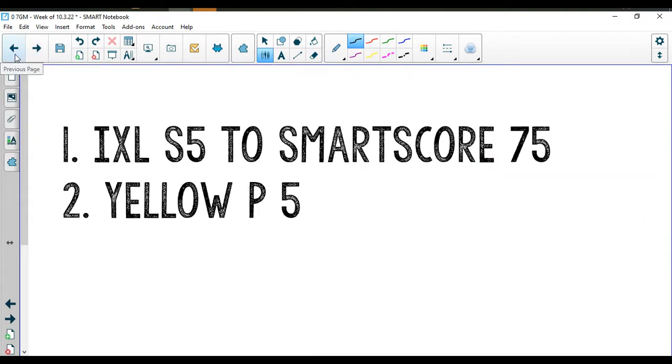So that is it for your lesson then. Hopefully you wrote those two things down. What I'm going to ask you to work on for the remainder of class time is the IXL S5 to a smart score of 75. I will be grading this and it will be worth two points for you. And then I'm also going to ask you to work on yellow packet page number five. This is a maze.